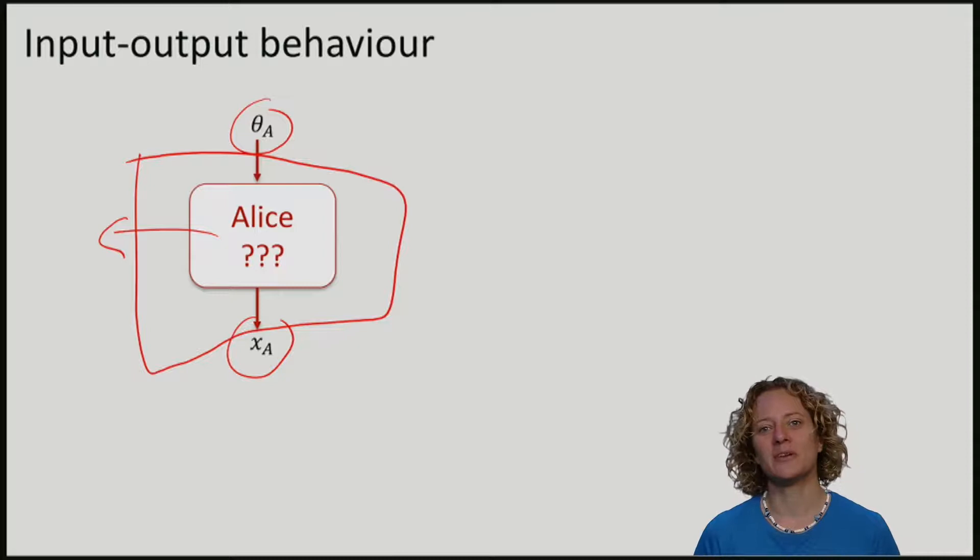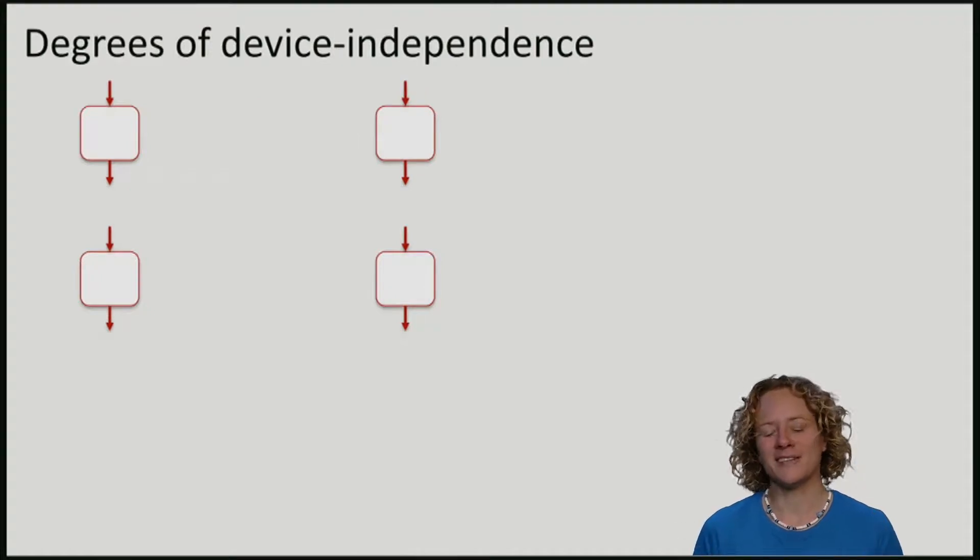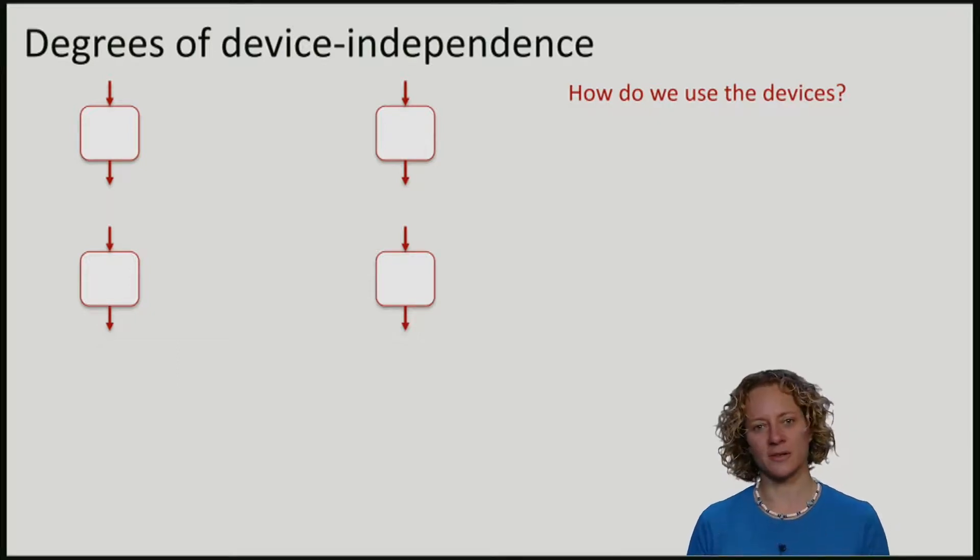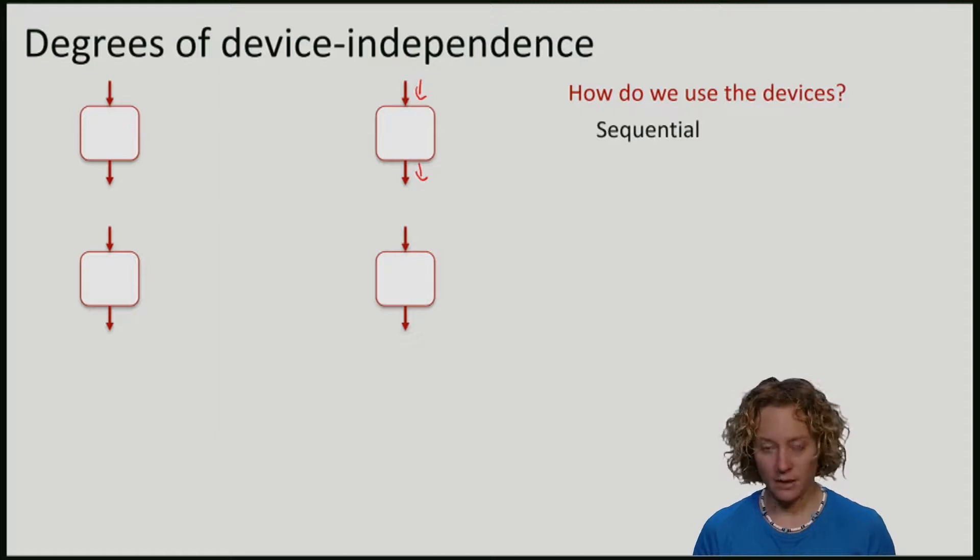In the literature, we will find all kinds of degrees of device independence, or let me call it degrees of paranoia. The first question is, how do we use the devices? In most practical scenarios, Alice and Bob will only have one device, and they will use this device sequentially, meaning that they give an input to the device and observe a measurement outcome. And they obtain the measurement outcome before giving the next input. So it is the same device, and they use it in sequence.